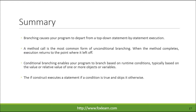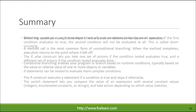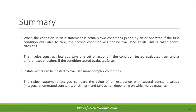Branching causes your program to depart from a top-down, statement-by-statement execution. A method call is the most common form of unconditional branching. When the method completes, execution returns to the point where it left off. Conditional branching enables your program to branch based on runtime conditions, typically based on the value or relative value of one or more objects or variables. The if construct executes a statement if a condition is true and skips it otherwise. When the condition in an if statement is two conditions joined by an OR operator, if the first condition evaluates to true, the second condition will not be evaluated at all — this is called short-circuiting.